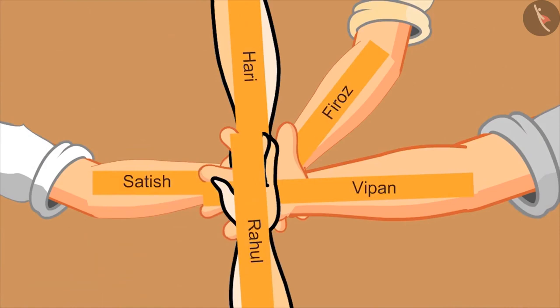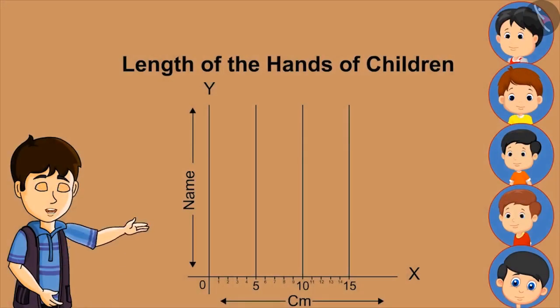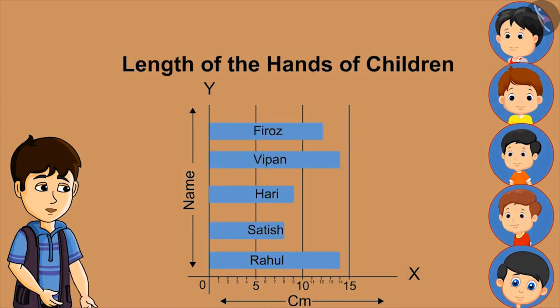You all have to write your name on it and put it on this chart. In this chart, all your strips are placed with your name and a scale is drawn towards the bottom.